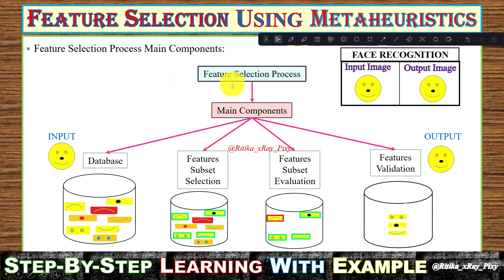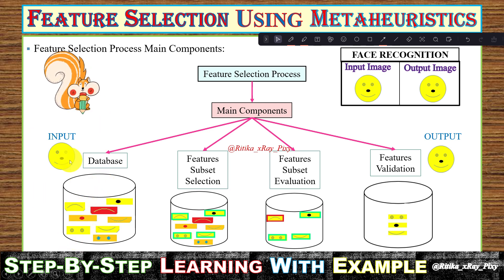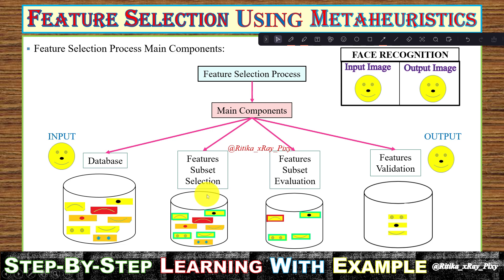The components used in the feature selection process are: the feature database, feature subset selection, feature subset evaluation, and feature validation. For example, in face recognition, the input image is matched against a database of different facial features — eyes, nose, mouth. Irrelevant features are also present in the database, so we select only relevant features, evaluate them, and then perform feature validation.